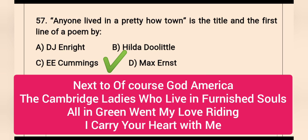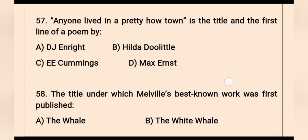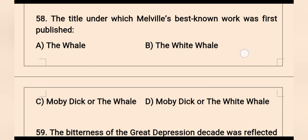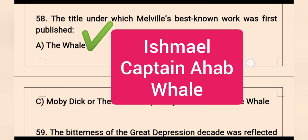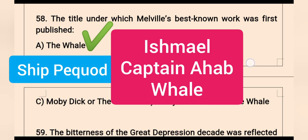Question 58: The title under which Melville's best known work was first published — Herman Melville's best known work is Moby-Dick. Ishmael the sailor is the narrator of this novel, which is about the quest of Captain Ahab of the ship Pequod. Moby Dick refers to the giant white sperm whale.